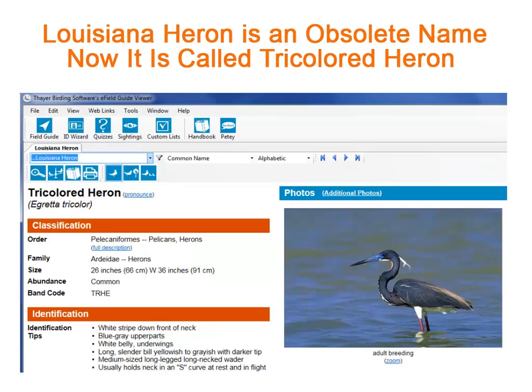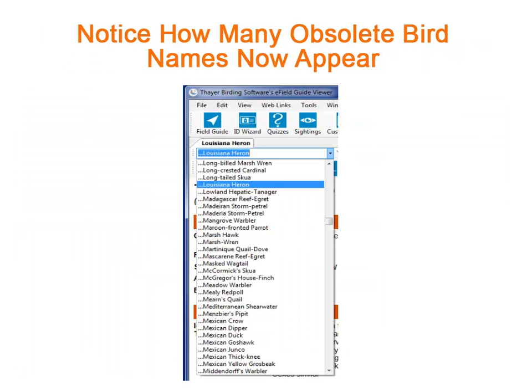When we click on the name Louisiana Heron, we discover it is now called Tricolored Heron. This name change occurred in 1983. And now when you click the drop-down list, you can see a huge number of bird names that are no longer used.